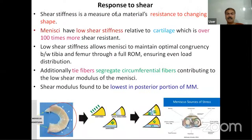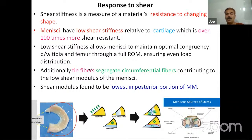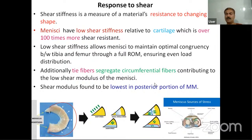The last biomechanical property is response to shear. Shear stiffness is the measure of a material's resistance to changing shape. The menisci have low shear stiffness relative to cartilage, which has over 100 times more shear resistance. This low shear stiffness allows the menisci to maintain optimal congruency between tibia and femur throughout the range of motion, ensuring even load distribution. Additionally, the tie fibers segregate the circumferential fibers, contributing to the low shear modulus. The shear modulus is lowest in the posterior portion of the medial meniscus.